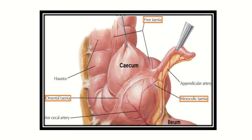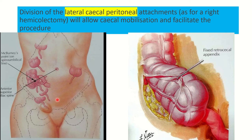In this picture we can see the cecum, and at the base of the cecum there is the appendix — a worm-like structure lying at the junction of the taeniae coli. We can also see the appendicular artery supplying the appendix, which arises from the iliocolic artery, which in turn arises from the superior mesenteric artery.